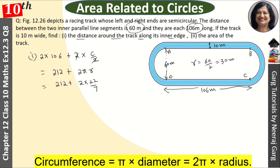So this is the diameter of the semicircle. So r is 30. Clear. So when we solve this, it will come 212 plus 1320 upon 7. We will take 22/7 for π, and it will come 2804 upon 7 meters. This is our answer for the first part, the distance around the track along its inner edge. This is the inner perimeter.